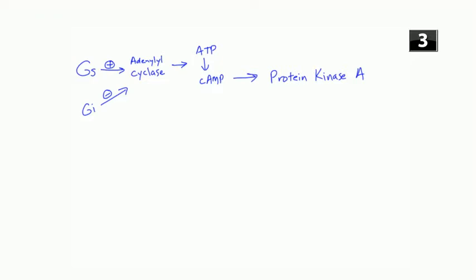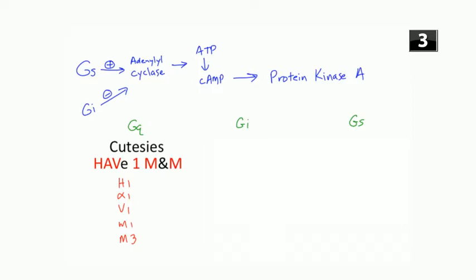Which receptors use each of these G proteins? Gq is used by the HAV-1 M&M receptors: H1, alpha-1, V1, M1 and M3. Gi is used by the MAD-2s: M2, alpha-2 and D2. All the other receptors we talked about use Gs: beta-1, beta-2, D1, H2 and V2. Alright, let's get to the lecture.